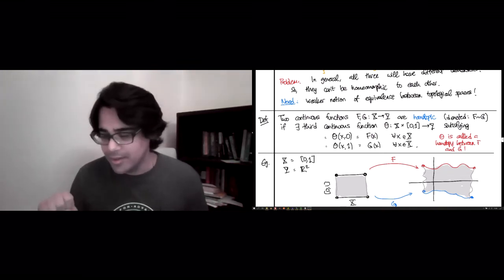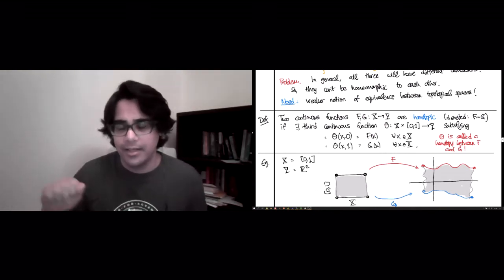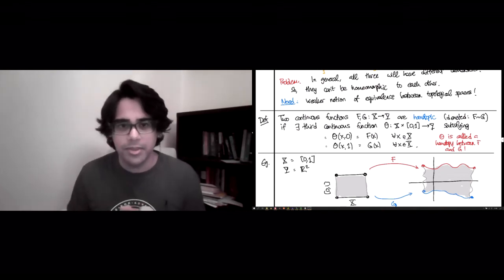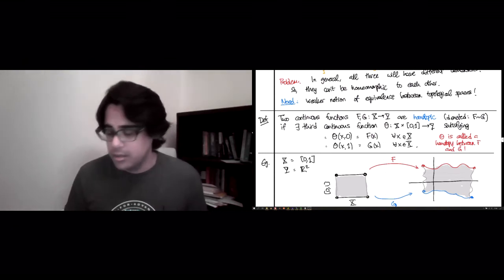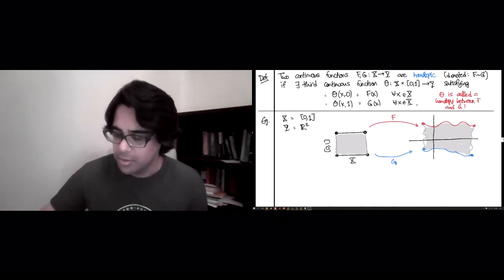If you remember the lecture on Vietoris-Rips filtrations and Čech filtrations, there was a slider that decided what the radius of the balls was that you were considering to connect with simplices. And here, again, there is a slider. There's a slider, you just think of t as living between 0 and 1. When t is equal to 0, you have f. When t is 1, you have g. And that's it. That's the definition of when two functions are homotopic.